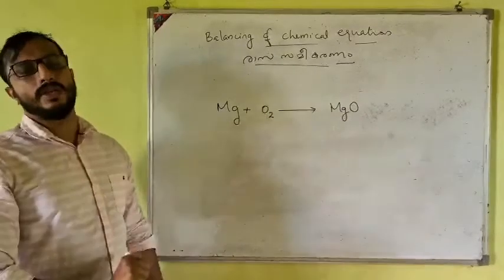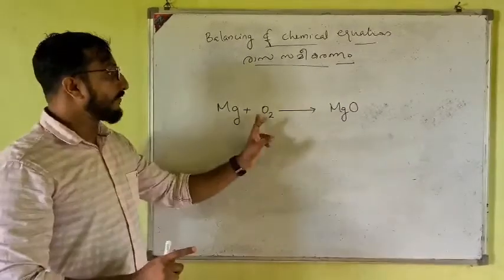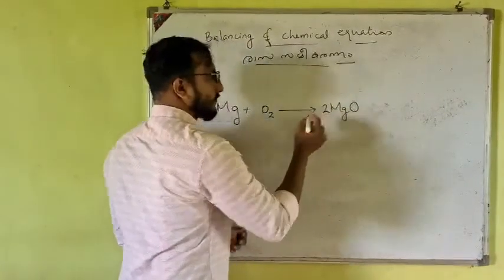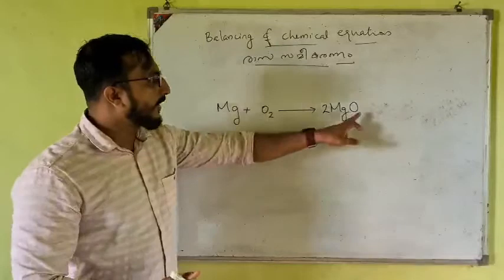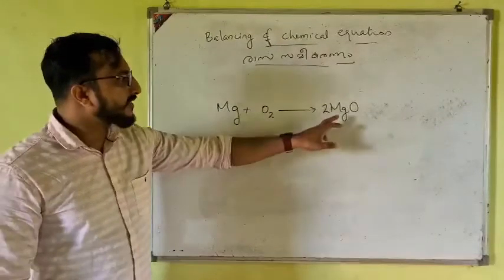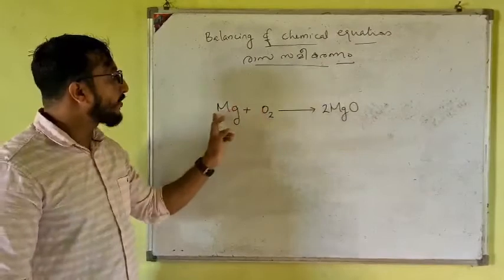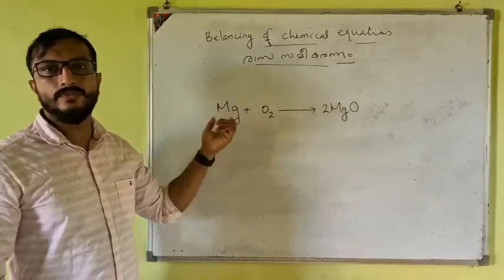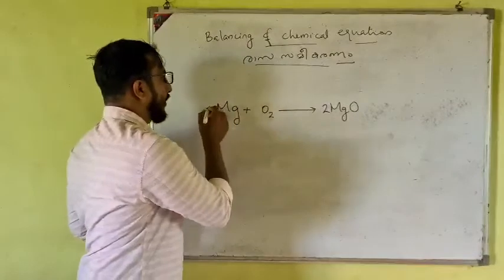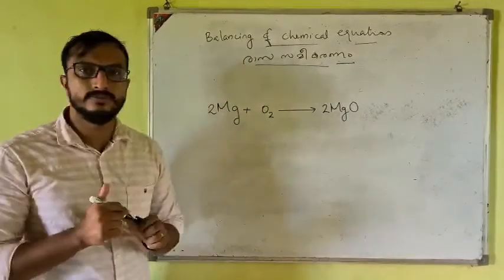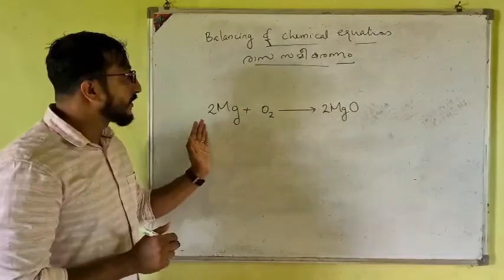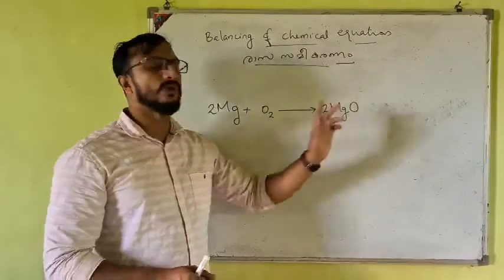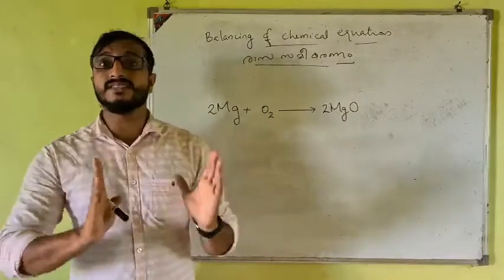So we have two oxygen on the reactant side. We need two oxygen on the product side as well. There is also magnesium to balance — we need two magnesium atoms on both sides.